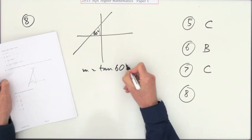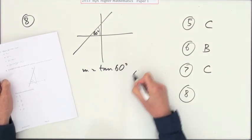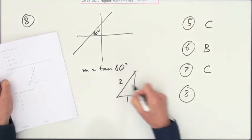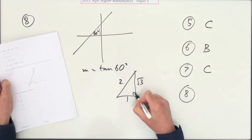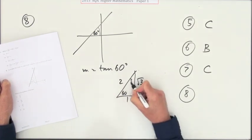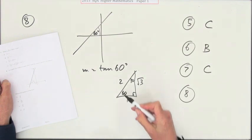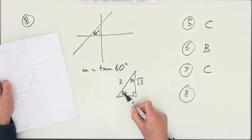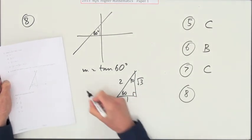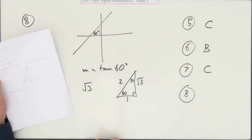What's the tan of 60? If you don't remember, you do your 1, 2, root 3 triangle. That's the 60, that's the 30. Tangent's opposite over adjacent. Opposite the 60 is root 3, root 3 over 1 which is root 3. And root 3 is D.